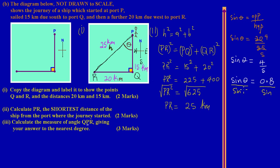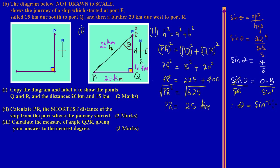Since sine is multiplying theta, we divide through by sine to isolate theta. When sine moves to the denominator on the other side, it becomes sine inverse — this relates to the inverse/negative index rule. So theta = sin⁻¹(0.8).